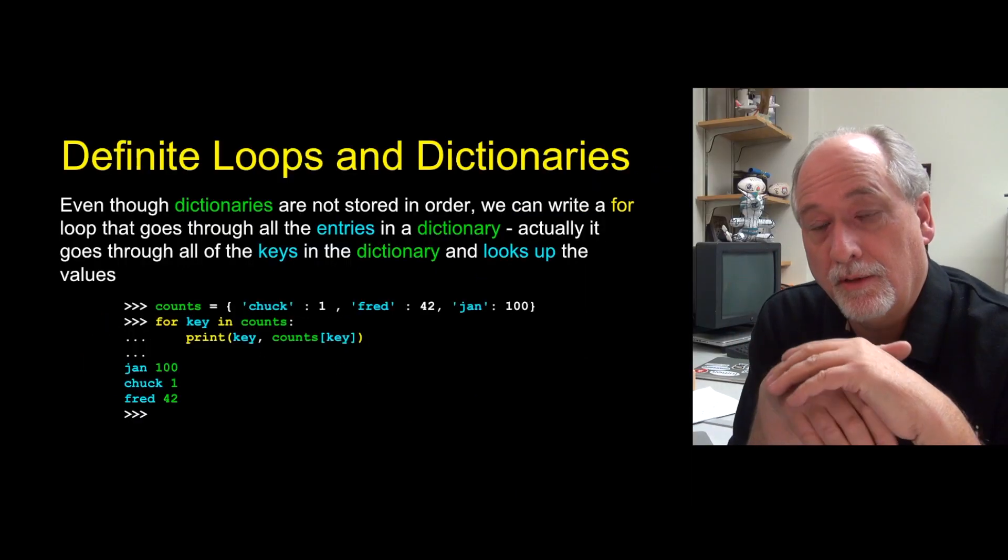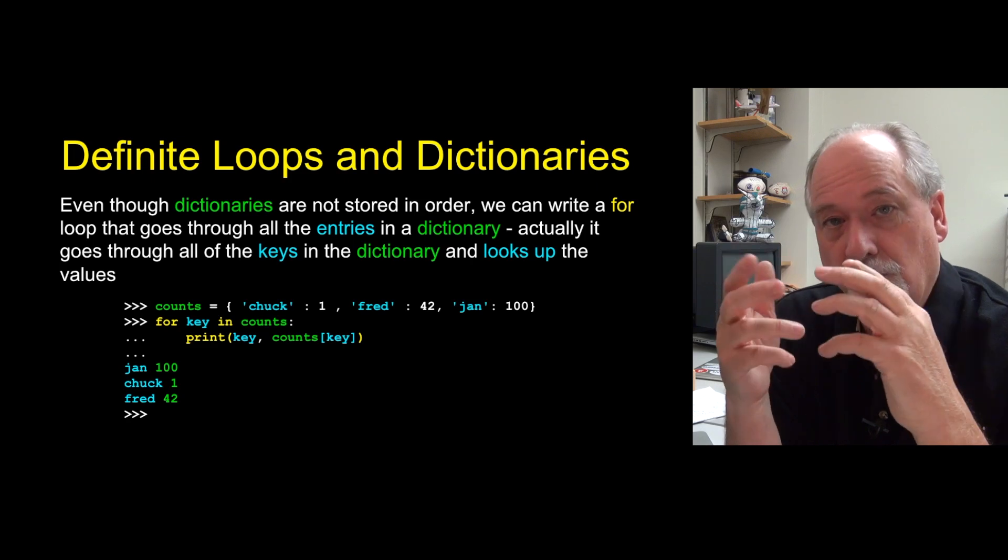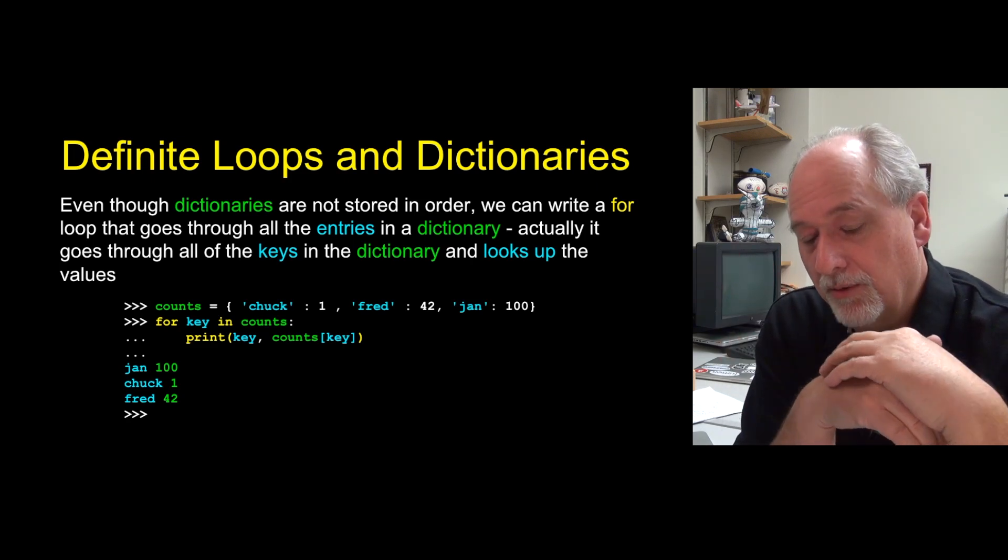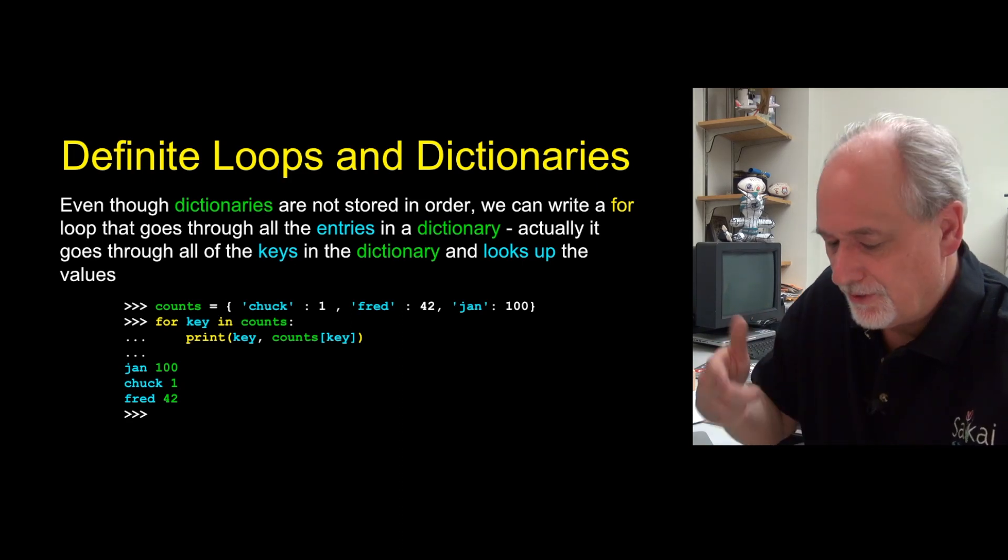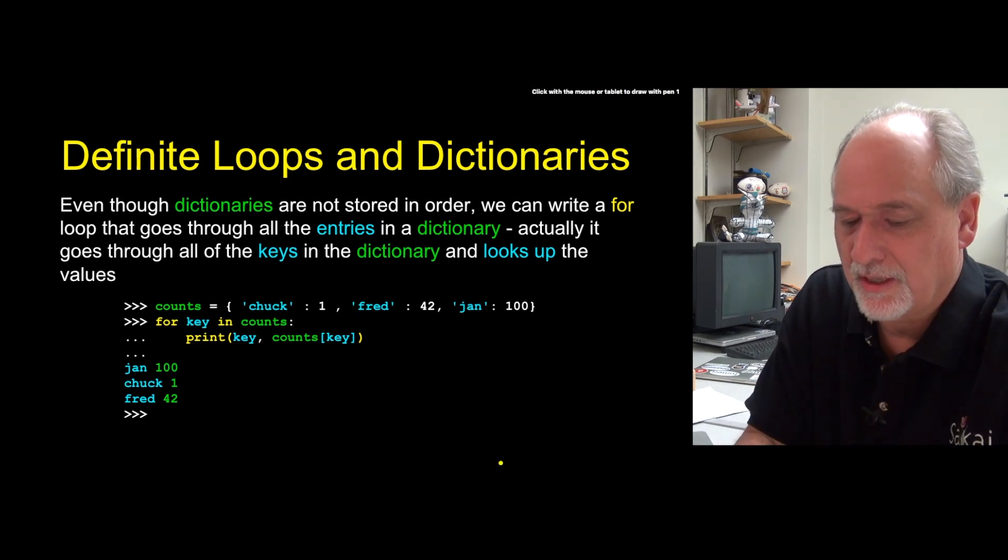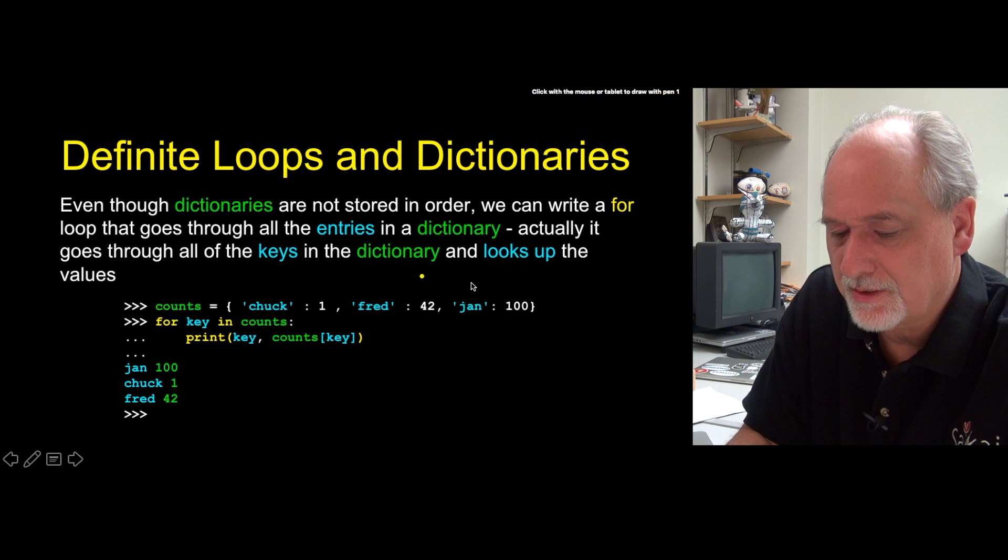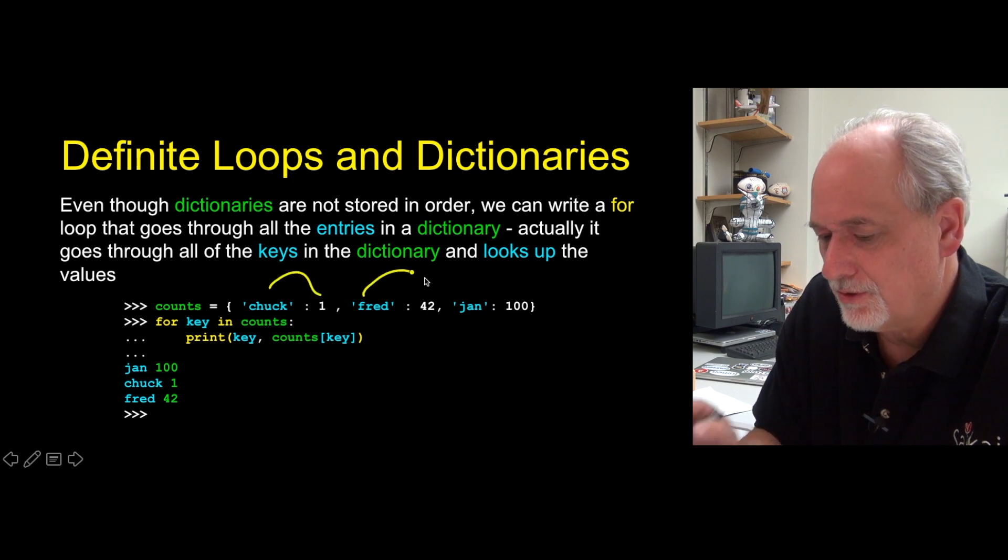So now we're going to look at ways that you can loop through dictionaries. We just produced a loop that can build a dictionary, but now we're going to look at a dictionary. And so we'll start with a very, very simple example and then we'll work to a slightly more complex example. So here's a dictionary, just the constant. Chuck is one, Fred's 42, and Jan's 100.